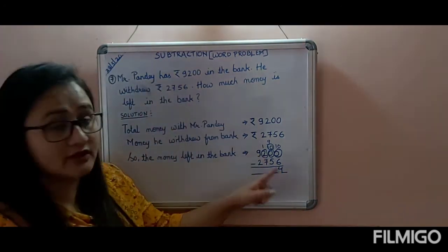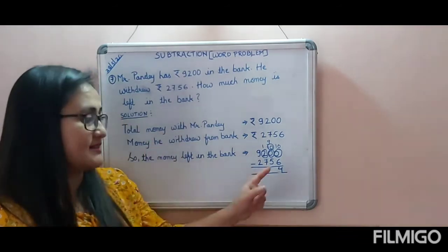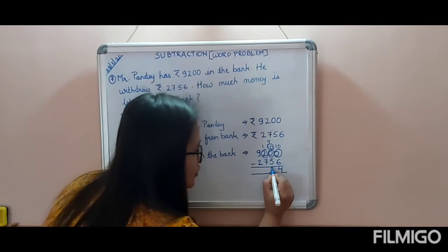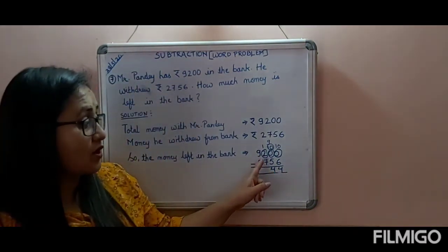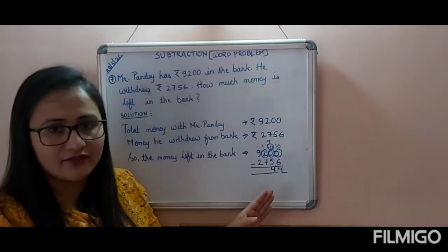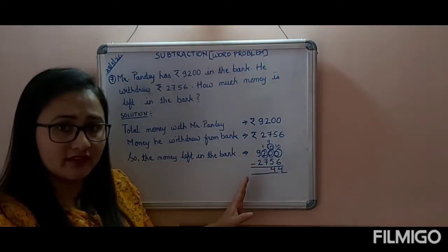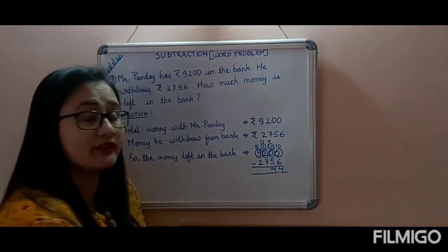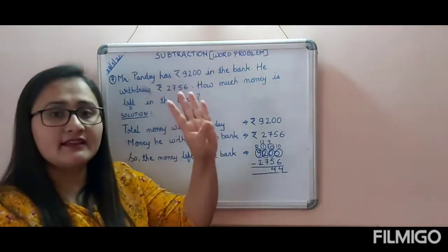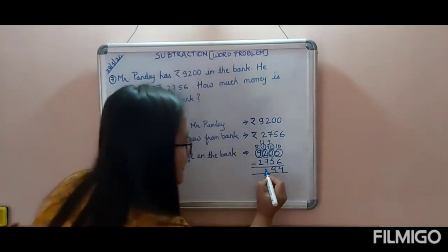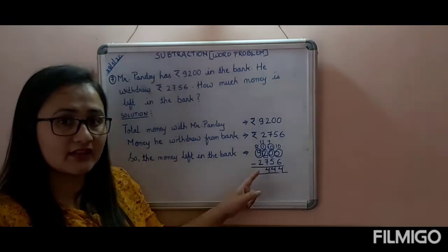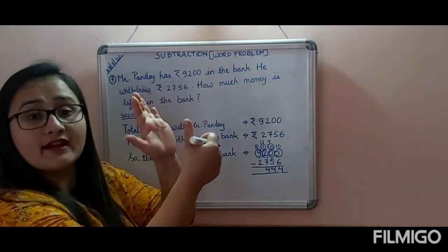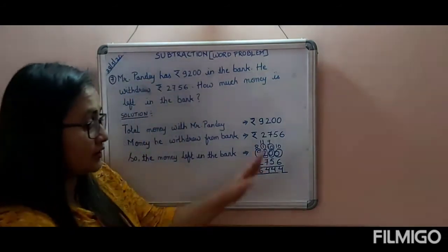The next digit: keep 9 in your mind, count after 5: six, seven, eight, nine — that is 4. But we already borrowed from the hundreds place, so only 1 is left there — you cannot subtract 1 from 7. So borrow from the thousands place: thousands becomes 8, hundreds becomes 11. Keep 11 in your mind, count after 7: eight, nine, ten, eleven — that is 4. Then keep 8 in your mind, count after 2: three, four, five, six, seven, eight — that is 6. So the answer is 6444.